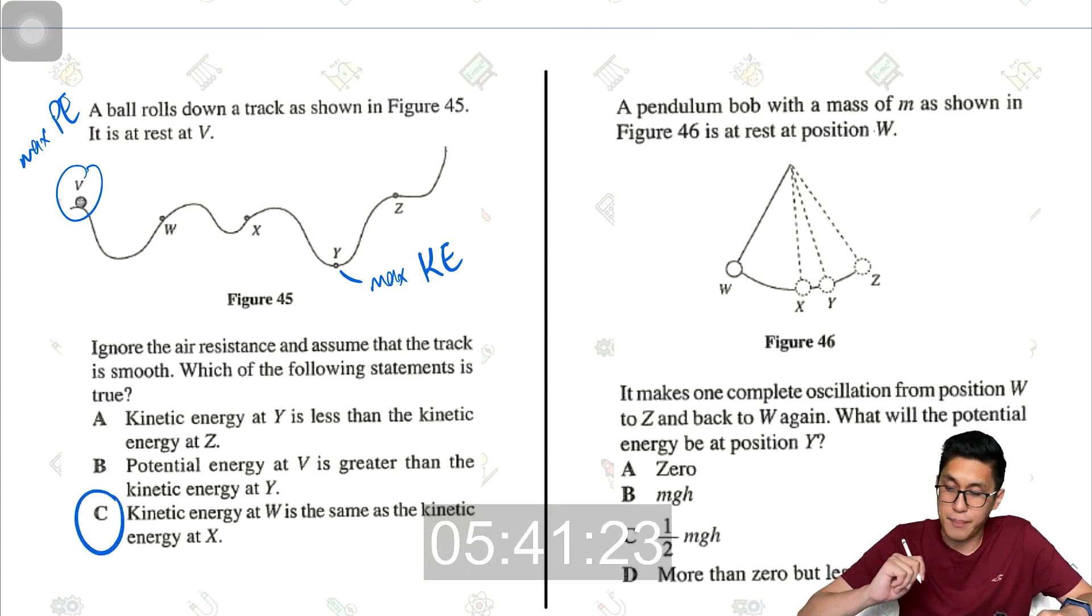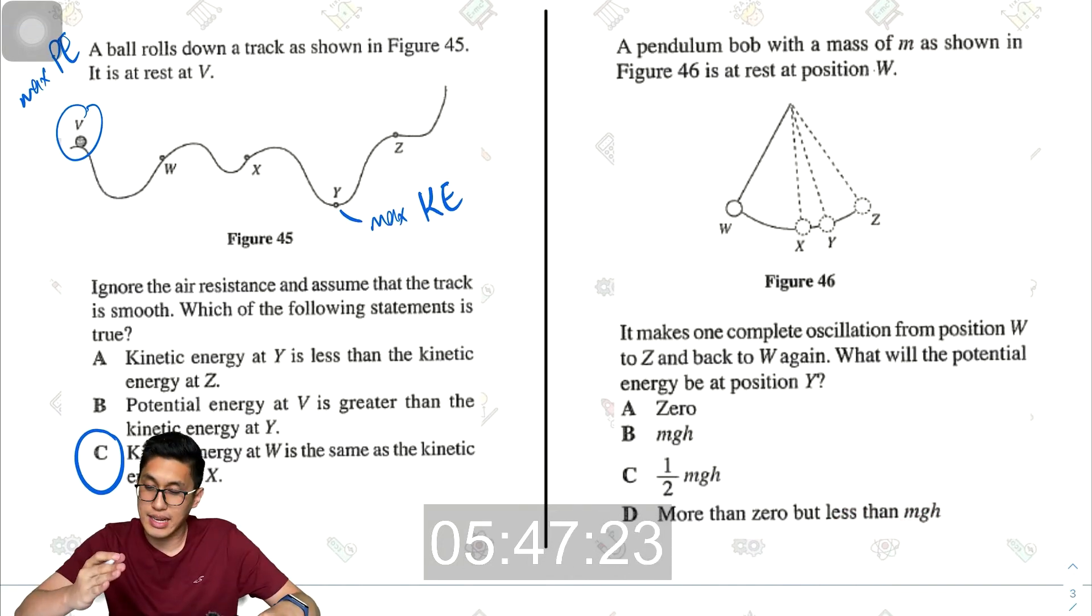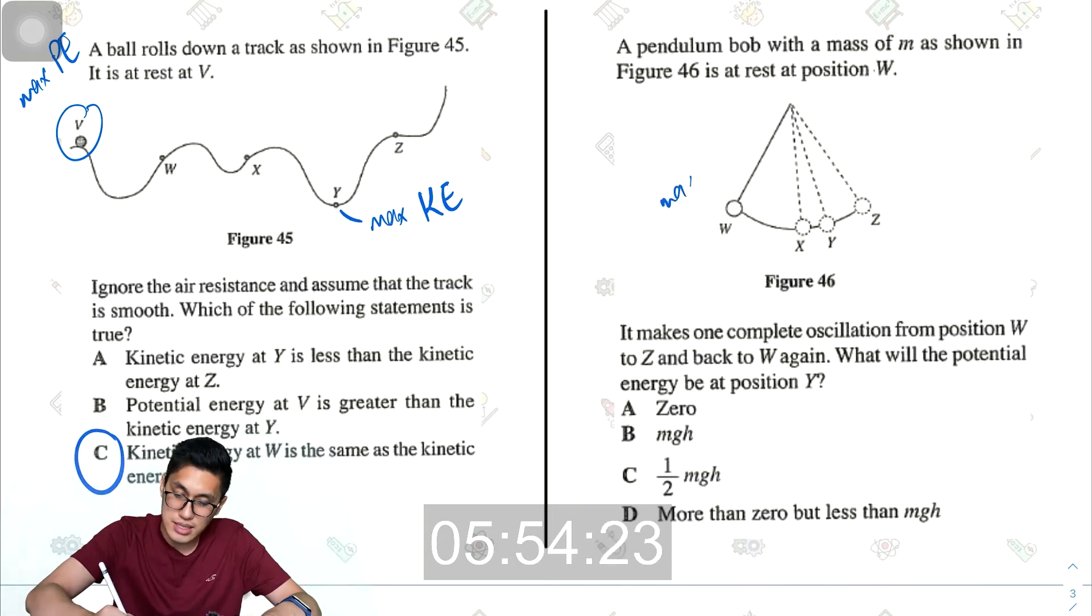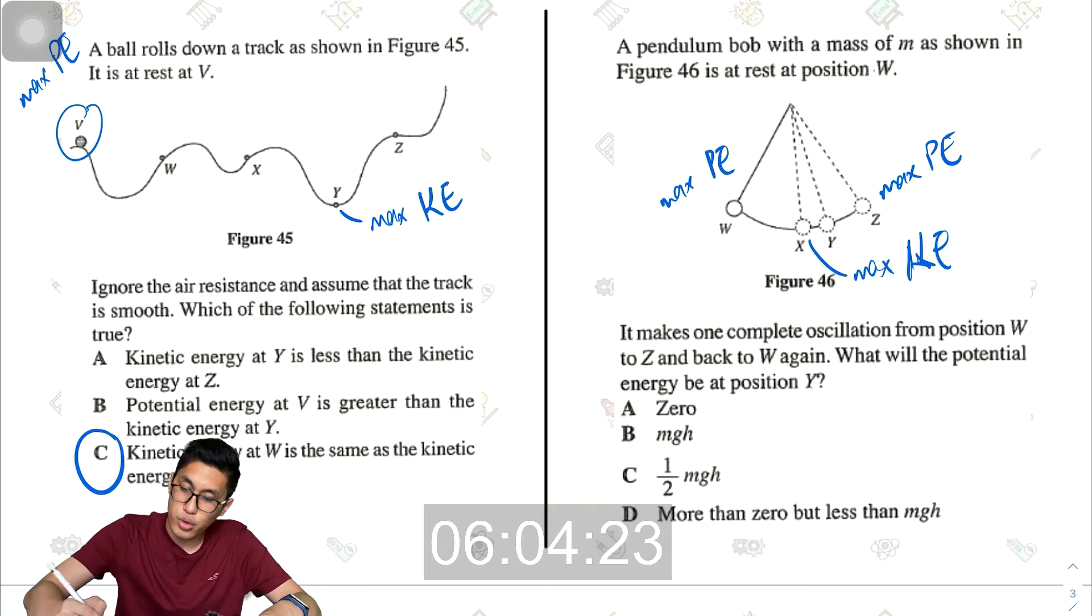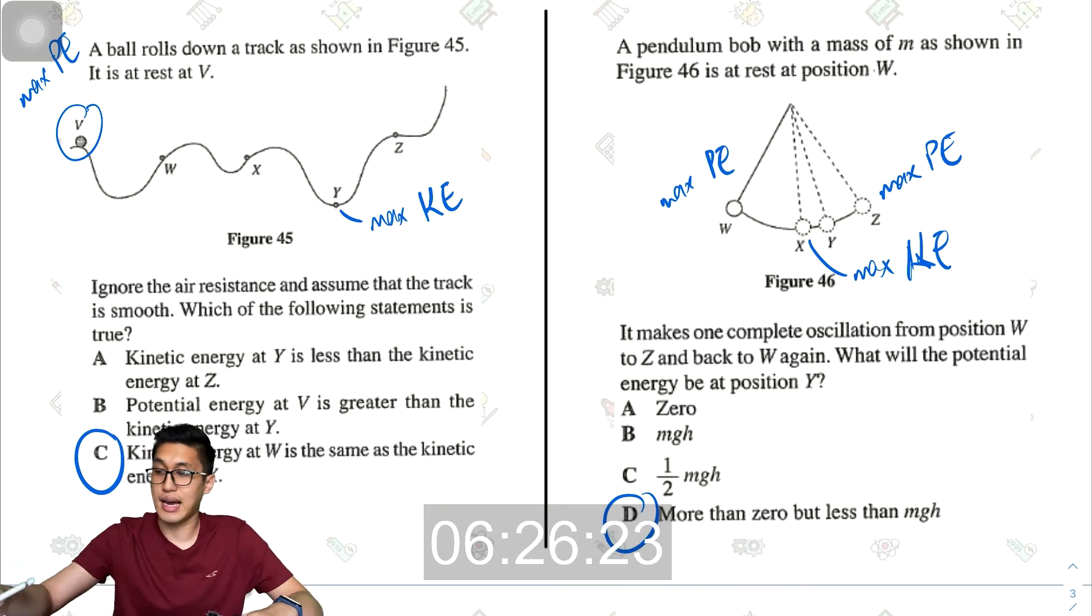A pendulum bolt with a mass of M as shown in figure 46 is at rest at position W. It makes one complete oscillation from W to Z and then to W again. What is the potential energy at Y? So here will be max potential energy. At Z is also max PE. At X, the lowest most point, this will be max kinetic energy. So at Y, the potential energy will be less than the maximum, which is MGH, but it will also be more than zero because it is not maximum kinetic energy. When it goes from X to Y, it will lose some kinetic energy to gain some potential energy. So the answer would be D, more than zero but less than MGH.